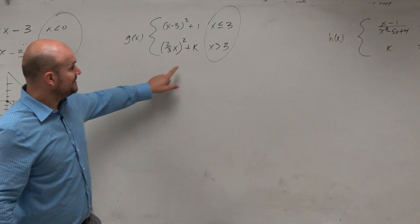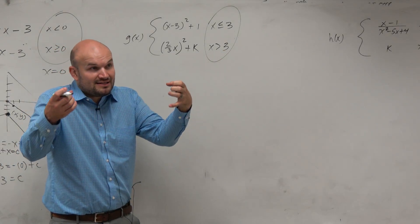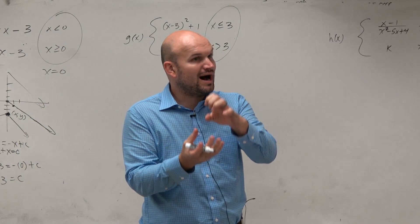We want to find where they're going to be continuous when x is going to equal 3. And again, we want not only the x's to be the same, which would be 3, but we want the y values to be the same.